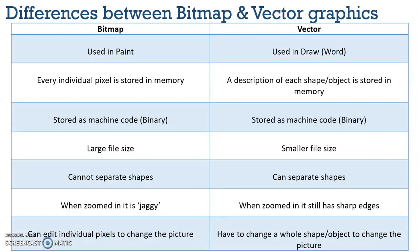The main differences between bitmap and vector graphics: bitmap is used in Paint, such as Microsoft Paint, where you can draw almost freehand. Vector graphics are used in draw programs, Microsoft Word, or PowerPoint. For bitmap graphics, every individual pixel is stored in memory, whereas for vector graphics only a description of each object is stored in memory. Bitmap graphics have a larger file size whereas vector graphics have a smaller file size, because bitmap graphics have to store every single pixel whereas vector graphics only store the description of the graphic.